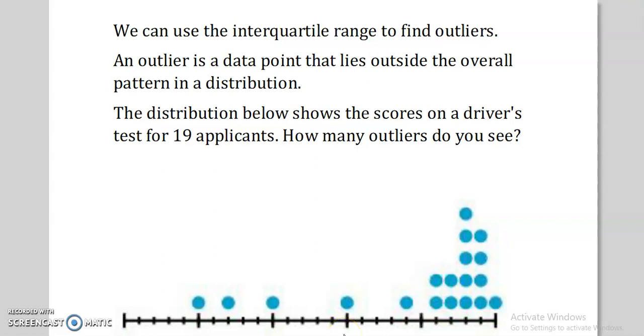So we have this data set. It's scores from a driver's test for 19 different people, and we graphed it on what's called a dot plot. So each of these dots represents one driver and what their score was. This represents a driver with a score of 25, and this represents a driver with a score of 5.